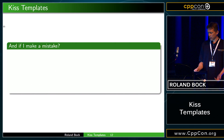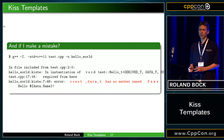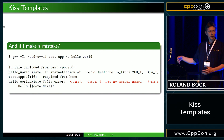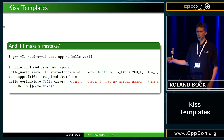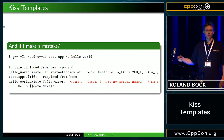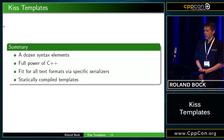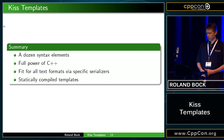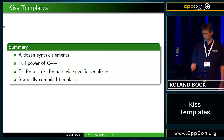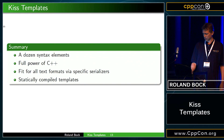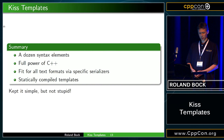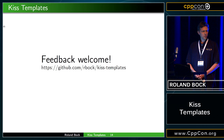If I make a mistake, there is a good chance that, because all this is statically compiled, you will get your errors at compile time, not at runtime — so no 500 internal server errors and stuff like that. In summary, it's just a dozen syntax elements, so very easy to learn. We have the full power of C++, it's fit for all text formats via specific serializers, and it's statically compiled templates. So I think I kept it simple, but not stupid. I'm looking forward to feedback, and thank you very much.